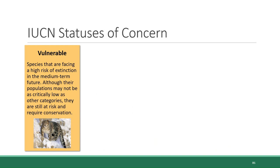The next category label is vulnerable. These are species facing a high risk of extinction in the medium-term future. Their numbers aren't as low as endangered or critically endangered species, but they are still at risk and require conservation. Snow leopards, which are native to the Himalayas, are classified as vulnerable, with somewhere in the range of 3,000 individuals left on Earth.